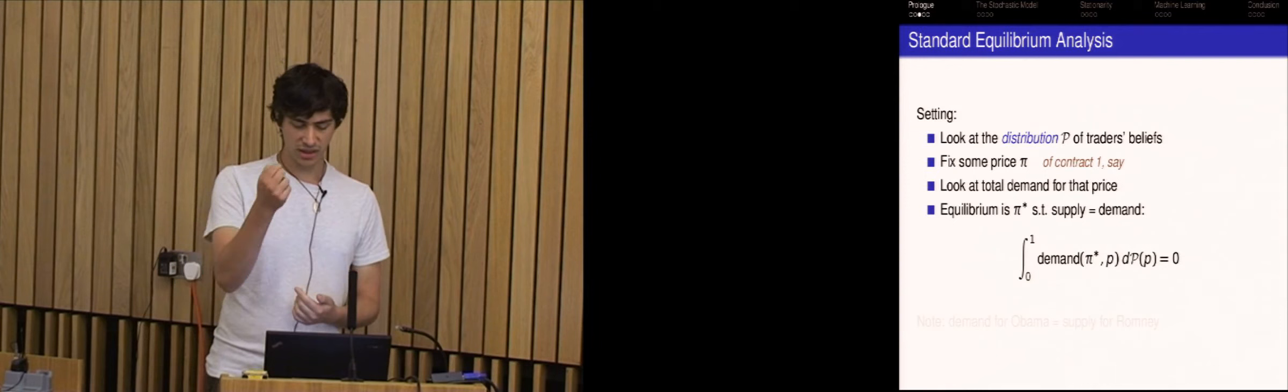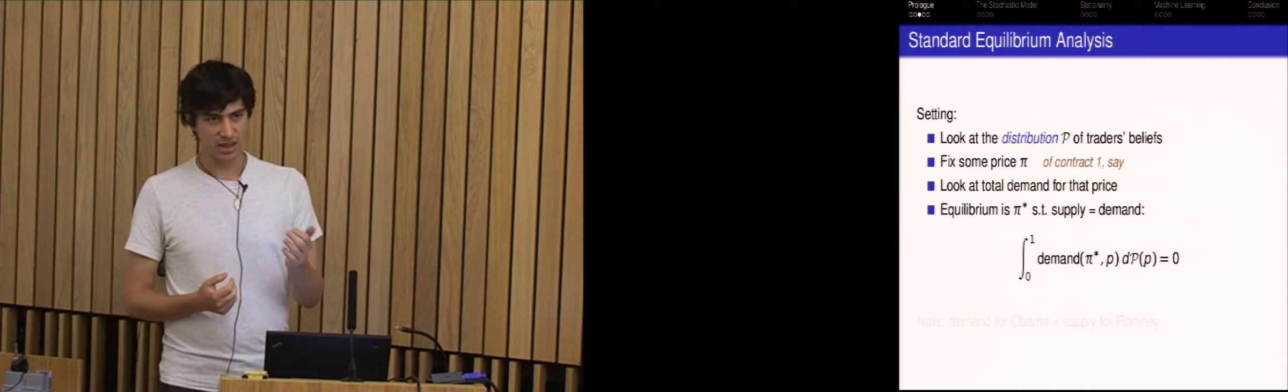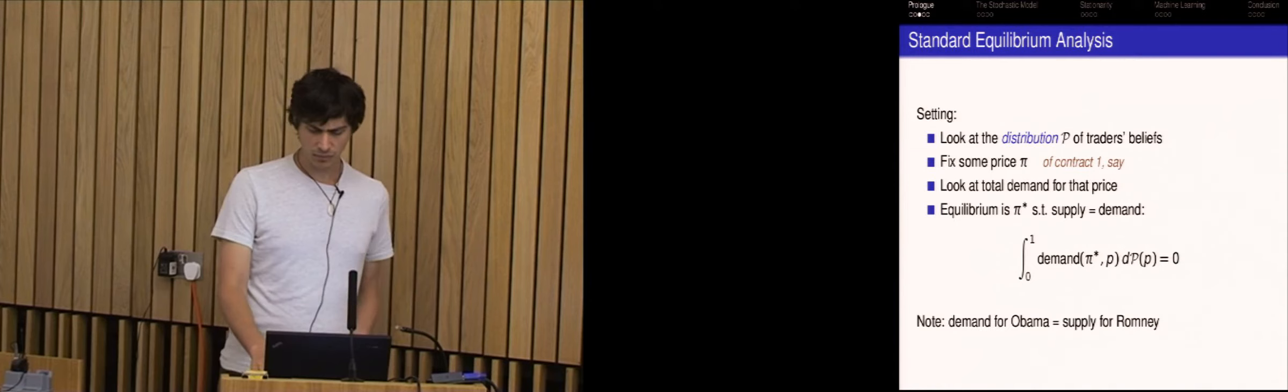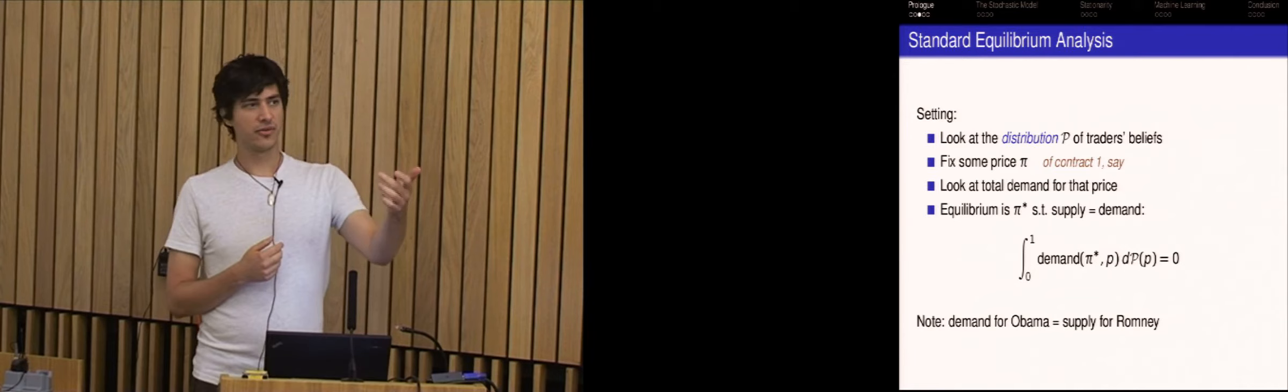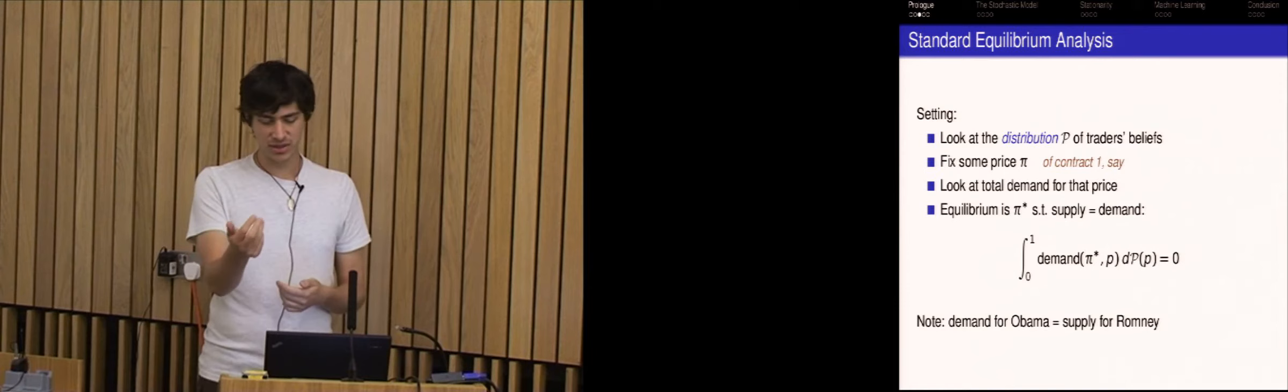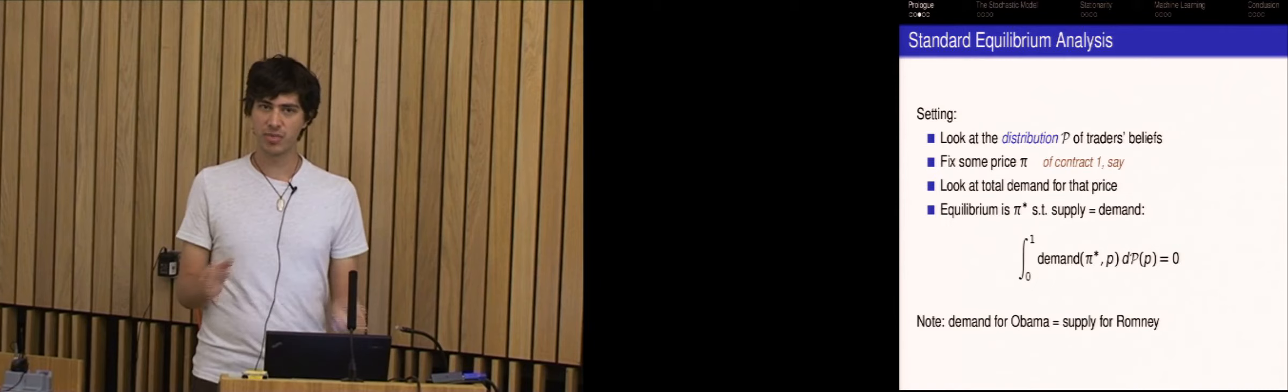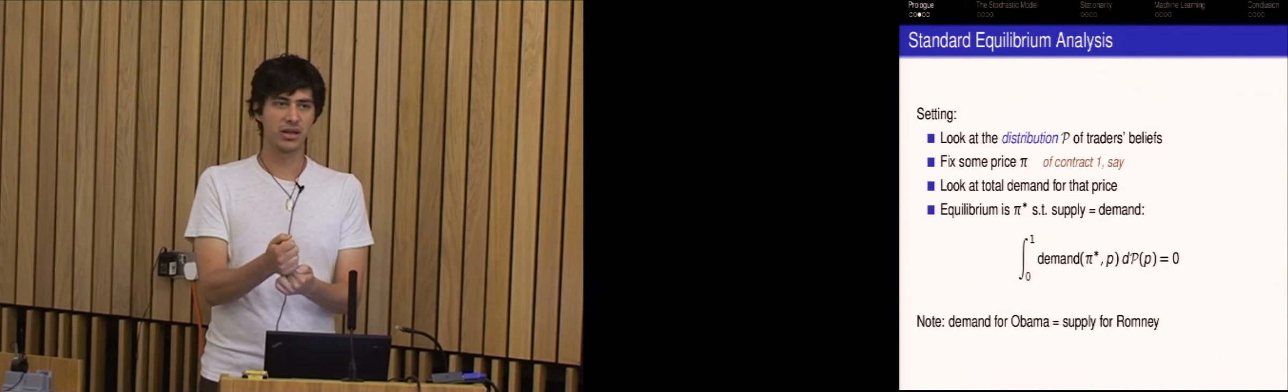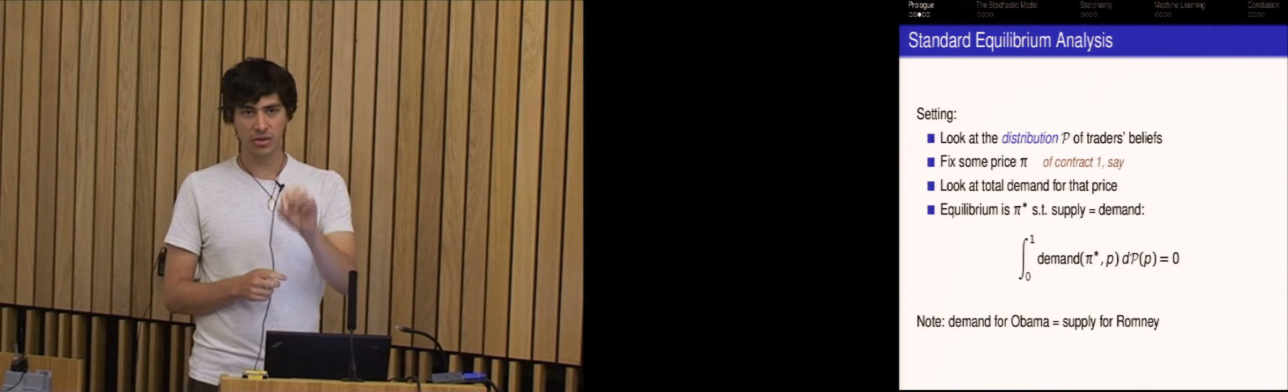And you fix some price pi of the Obama contract, say. And then you ask what is the total demand at this price for that contract? And you say the equilibrium price is just the price where supply equals demand, which in this case just means that the total number of buys for the Obama contract equals the sells. But because of our peculiar setting here, actually a sell for an Obama contract is the same as a buy for Romney. So suppose I didn't let you sell any contracts, just buy, and you wanted to go short in an Obama contract, it would be the same thing as buying a Romney contract.